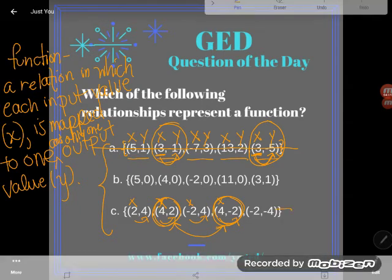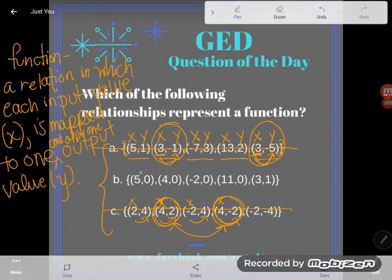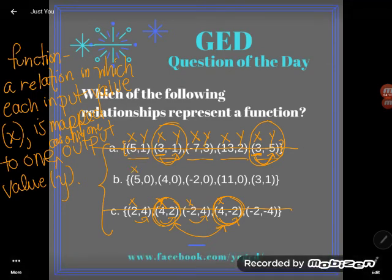But let's take a look at this one. I have an x of 5 and a y of 0, an x of 4 and a y of 0, an x of -2 and a y of 0, an x of 11 and a y of 0, an x of 3 and a y of 1.